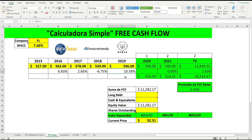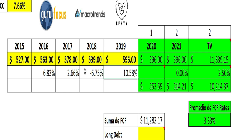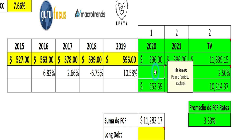These numbers represent the growth or loss of free cash flow. Basically, in 2015 it was 527 million — that was the owner's money left over after deductions and investments. Then 563, then 578. Here it dropped 6.75%. And here it went up 10% to 596. The average of these percentages is 3.33%. We will put 3.33% here, but we will be adjusting it for certain reasons which I will explain shortly.